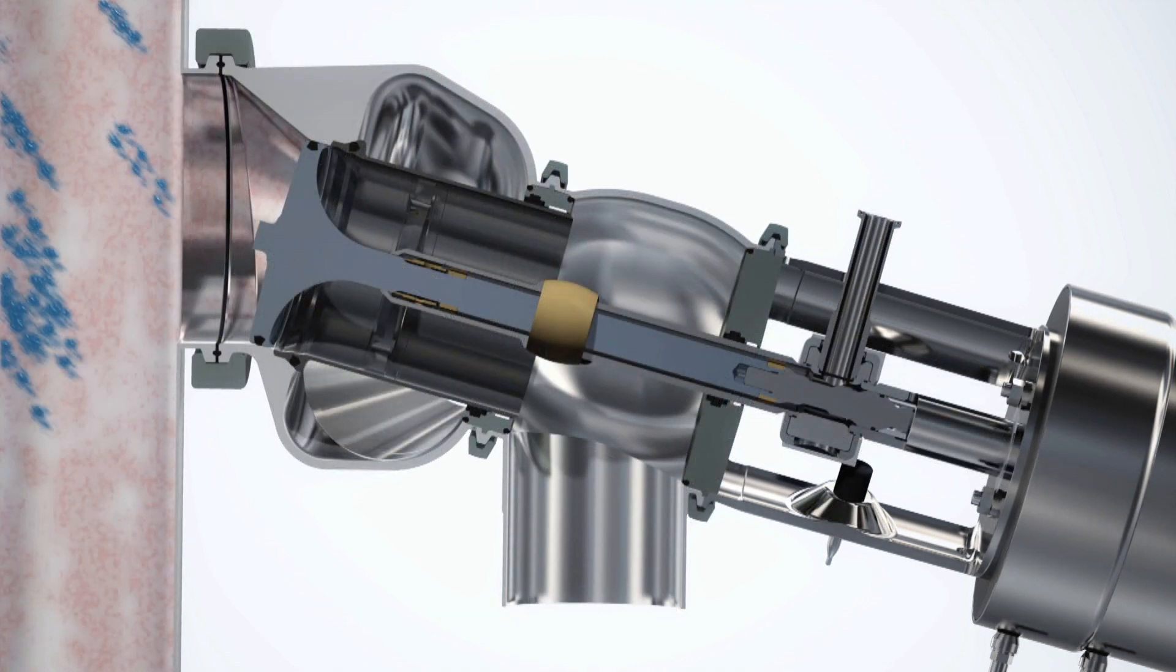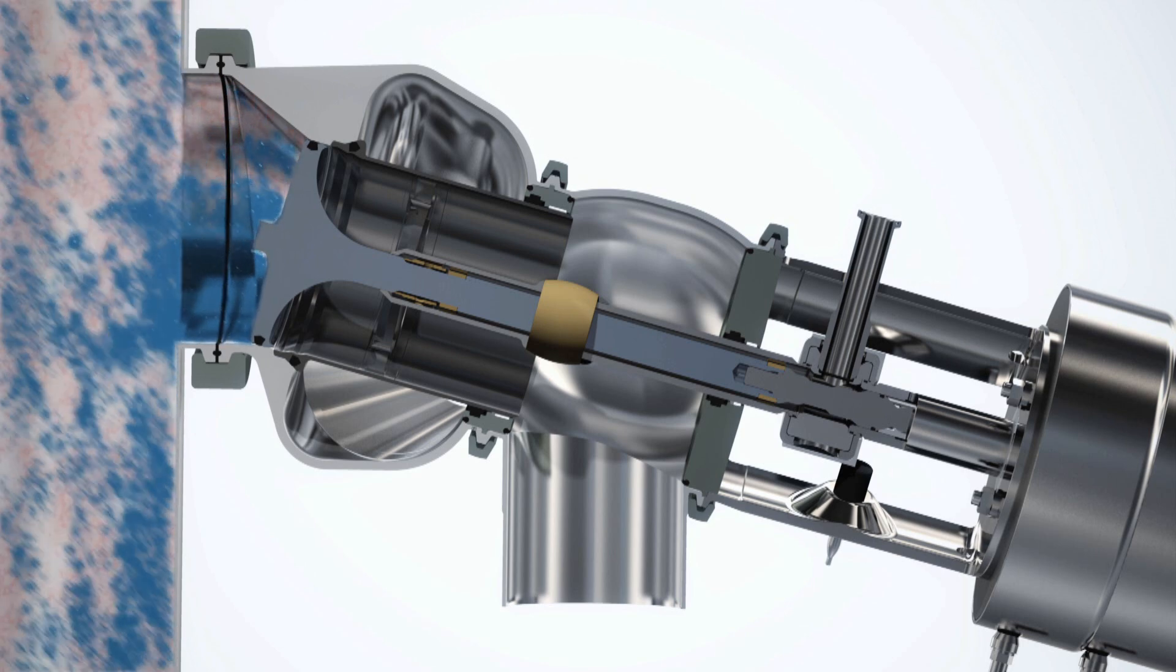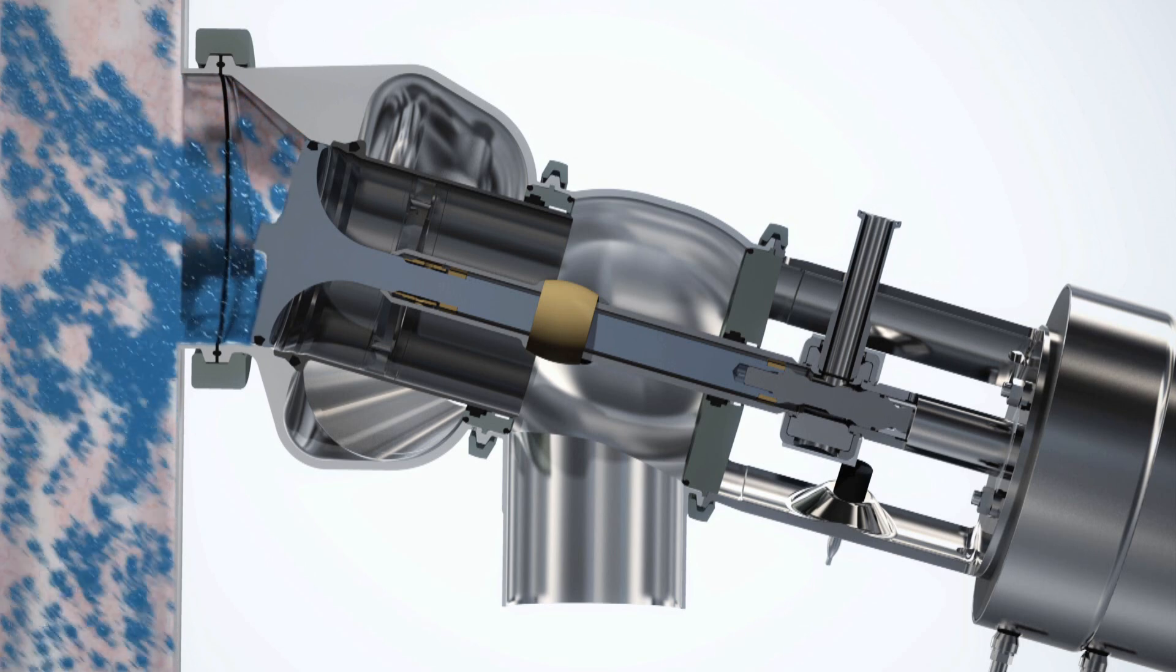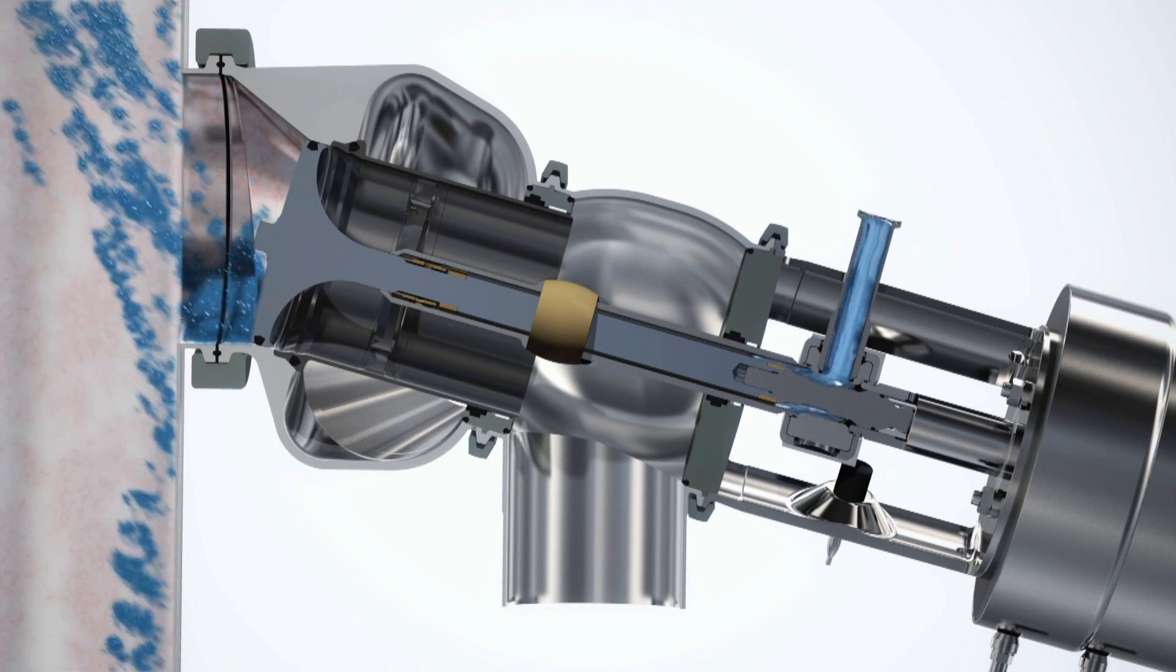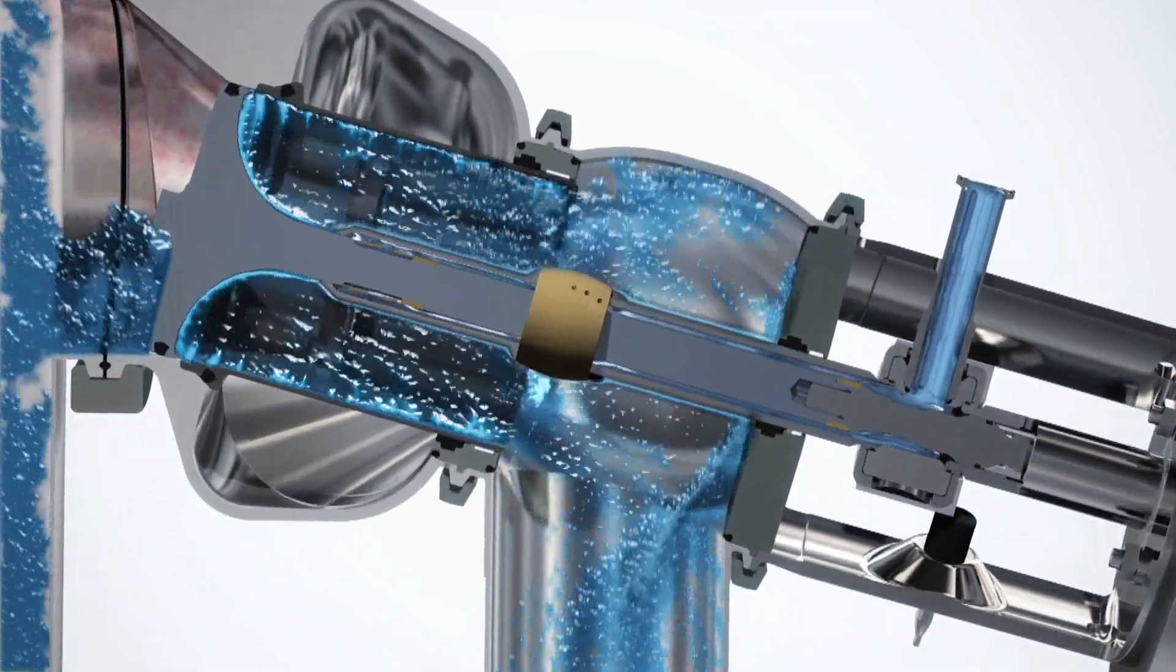Mounting the unique mix-proof horizontal tank valve on the side of the tank poses the challenge of cleaning the tank connection and all parts of the leakage chamber. The unique mix-proof horizontal tank valve is self-cleaning thanks to two CIP nozzles.